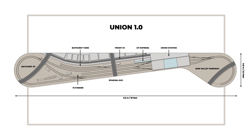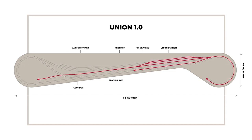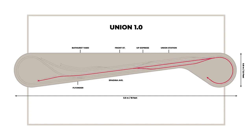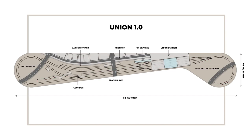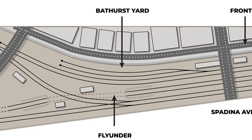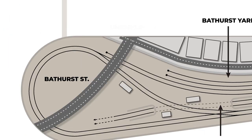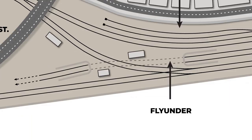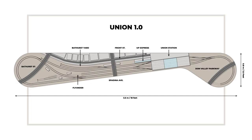Union Station has been compressed to six platforms, with four platforms dedicated to westbound trains and the remaining two dedicated to eastbound trains. Bathurst Yard has three sidings for staging, with one of the sidings extending past the edge of the layout to give the illusion of a double track mainline. The Bathurst Fly Under allows trains to descend into hidden staging, while the tracks above allow trains to switch between east and westbound routes.